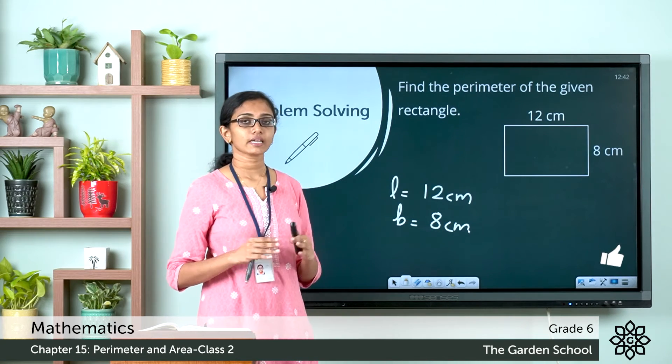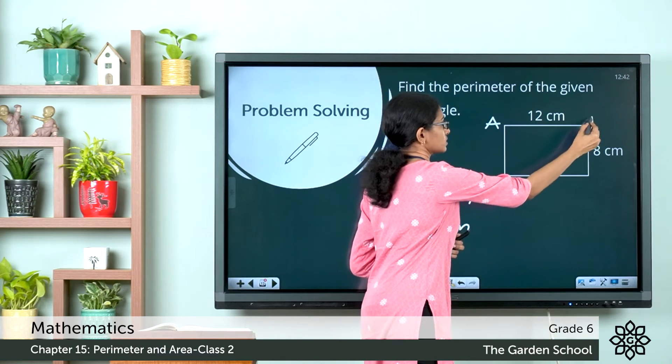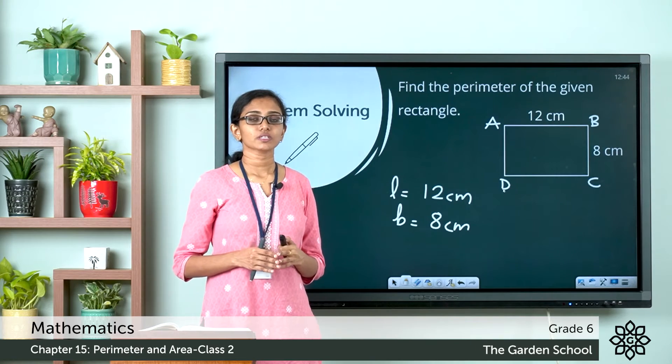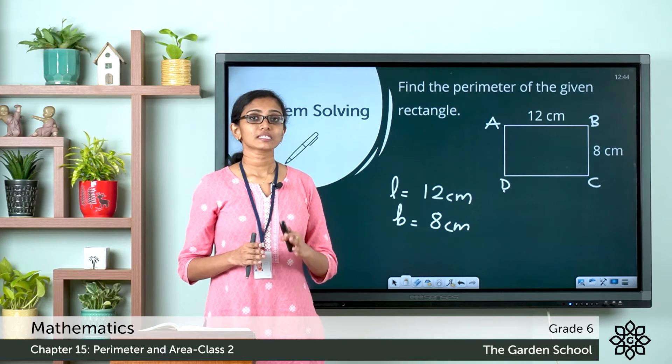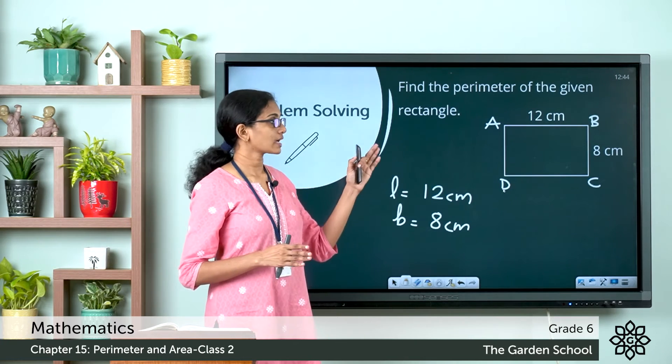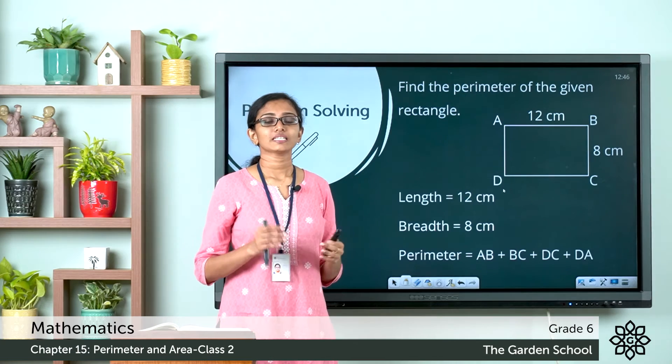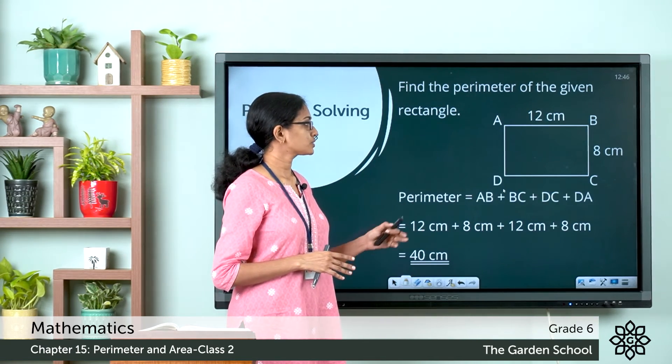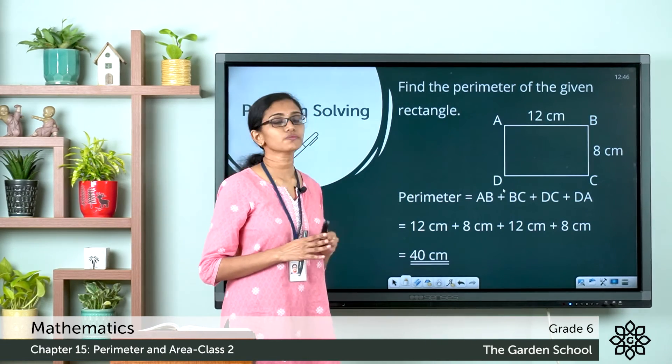Now let us name this rectangle as rectangle ABCD. So by definition, the perimeter of this rectangle ABCD will be equal to the sum of the length of side AB, BC, CD, and DA. Let us substitute the dimensions here in the equation. That would be equal to 12 plus 8 plus 12 plus 8, which is equal to 40 centimeter.